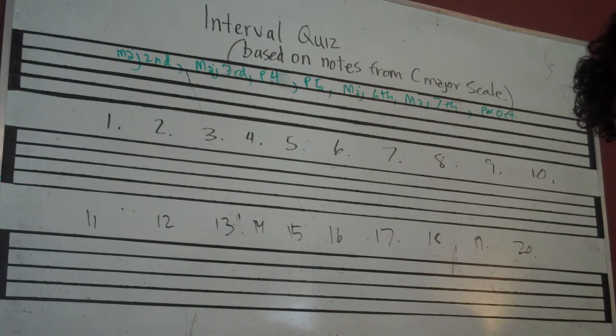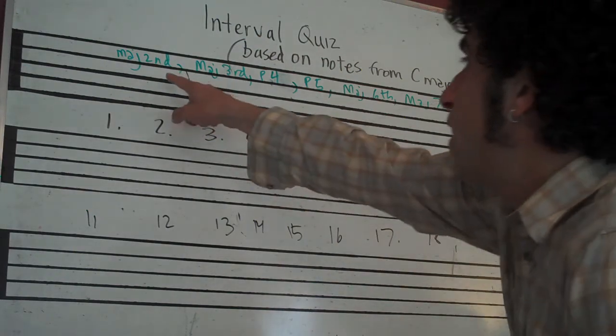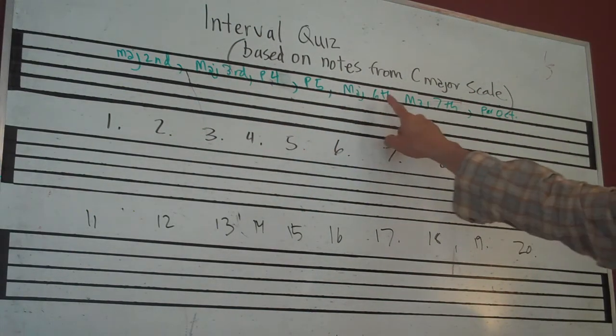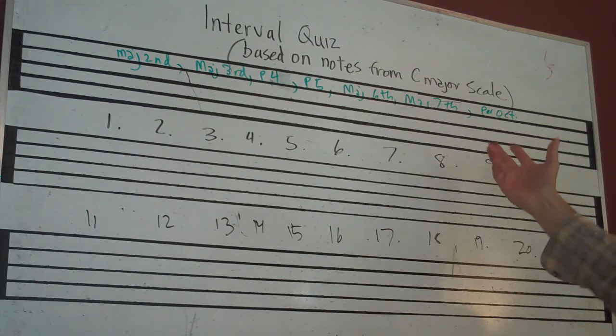So C will be the bass note, and then I'll be changing the second note. So major 2nd, major 3rd, perfect 4th, perfect 5th, major 6th, major 7th, and perfect octave. So these are your choices.